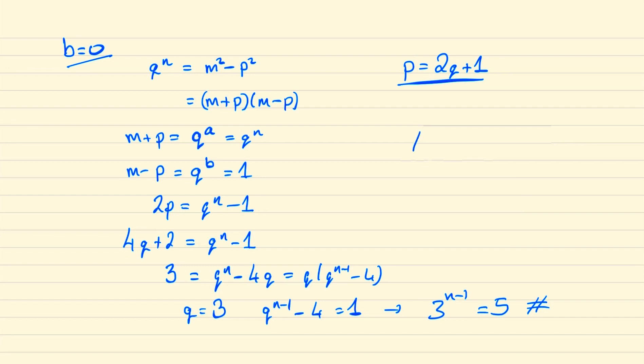And so we've proven for all possibilities that p² + qⁿ can never be a square number. And so we're done.